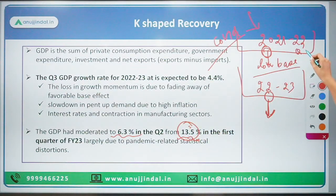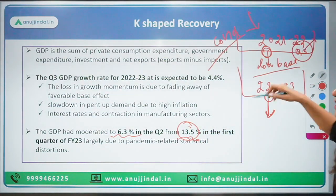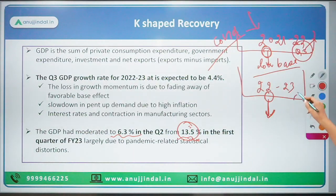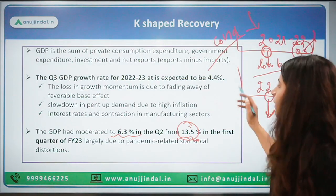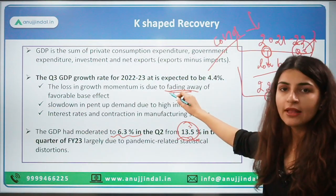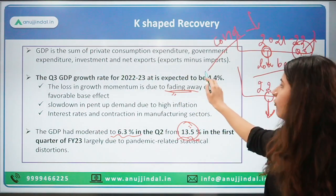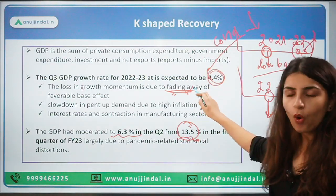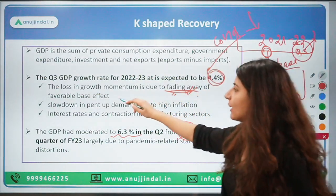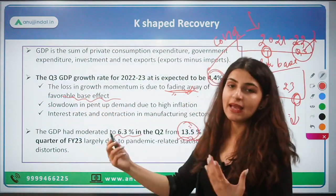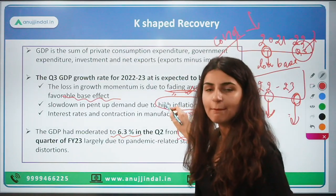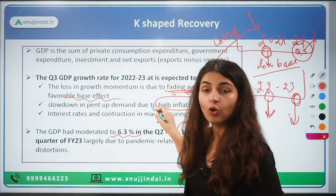However, in Q3 of last year, the growth was actually improving — the base was favorable and low. Now that favorable base effect is fading away. That is one of the reasons for the lower 4.4 percent growth this quarter — the fading away of the base effect.